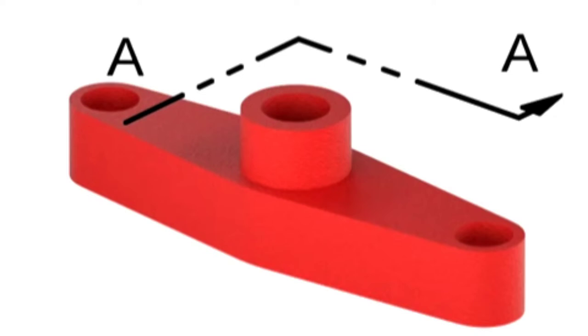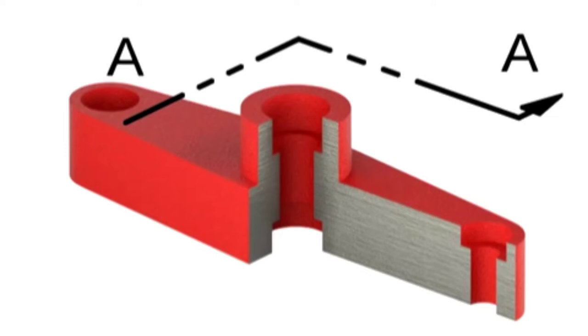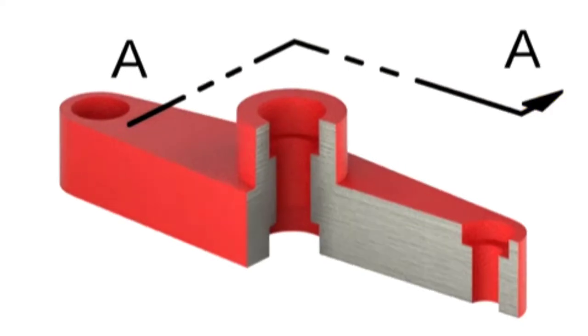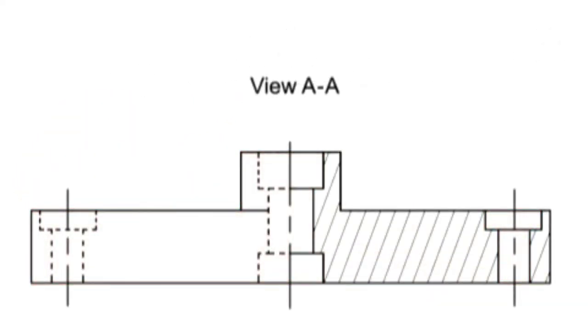Half section views are created when a section is taken from only one half of a symmetrical object. The cutting plane line for this type of view has only one arrow, since you are only viewing the section on one half of the object. One half of the new view shows the section, and the other half shows the original view.